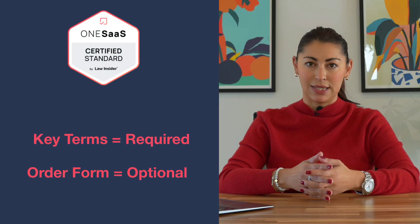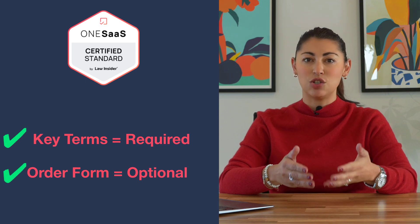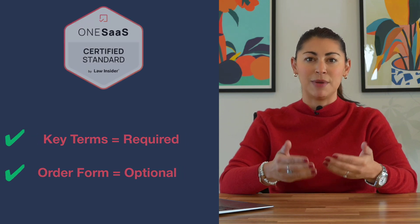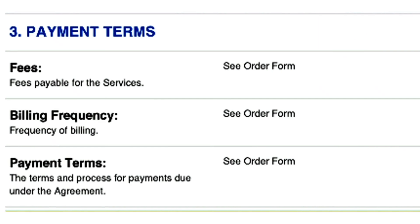Before you begin, it's important to understand the distinction between the key terms and your order form if you have one. Many SaaS providers already have their own order form that includes provisions specific to their service. You can still use your own order form alongside 1SAS. However, you must still complete the key terms section because it contains essential references needed for the agreement to function properly. If there's overlap between your order form and the key terms, you can write 'see order form' in the key terms instead of repeating information, or mark conflicting fields as N/A. If the key terms already include everything you need, then a separate order form is not necessary.